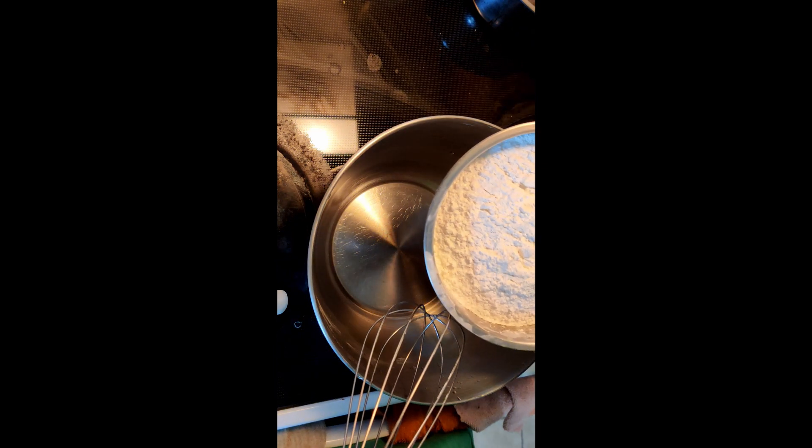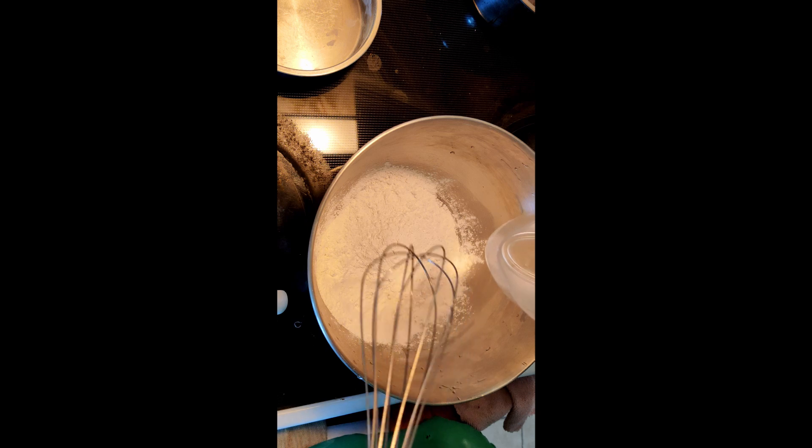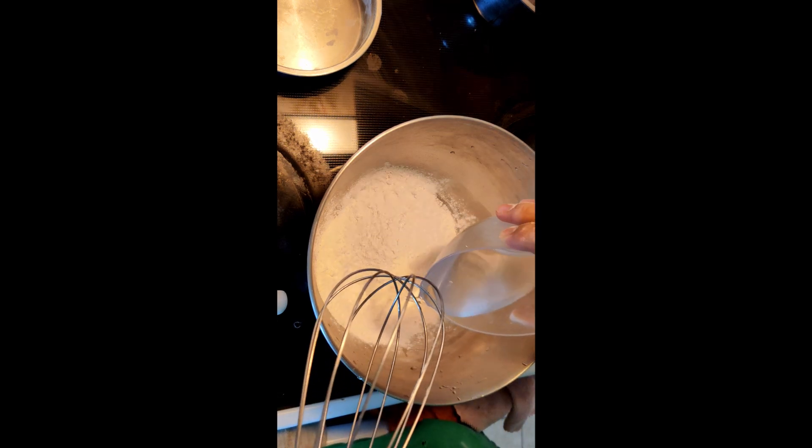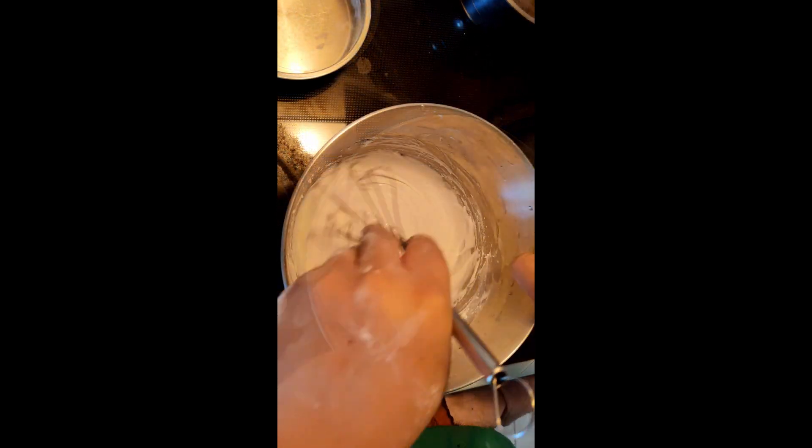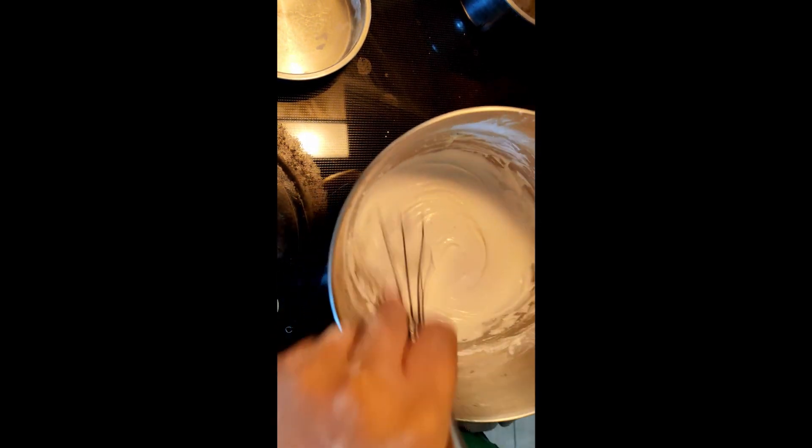So first step, we're going to add 125 grams of rice flour. Then I'm going to add 149 grams of water to mix with the rice flour. So you can see that my batter is very thick.